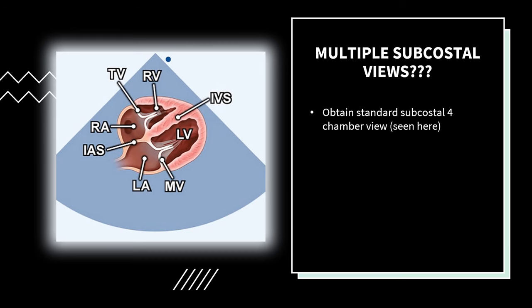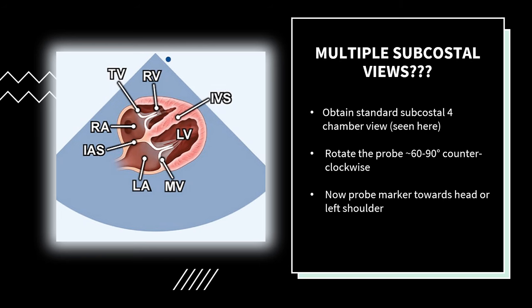You may be thinking there's only one subcostal view — a four-chamber view. But there are additional ones. What you'll want to do is obtain a standard subcostal four-chamber view and then rotate the probe on its axis approximately 60 to 90 degrees counterclockwise. The marker should now point to the patient's head or to the patient's left shoulder, and this will obtain a subcostal short axis view.